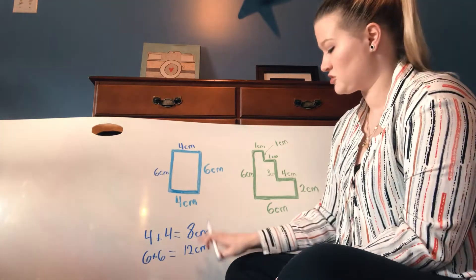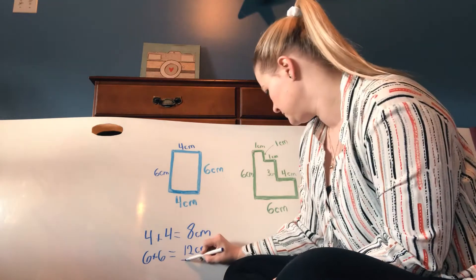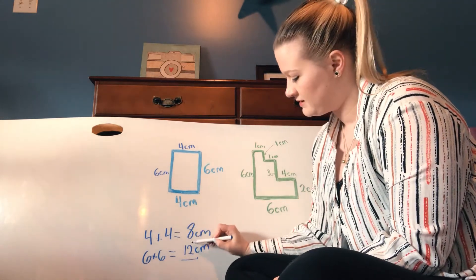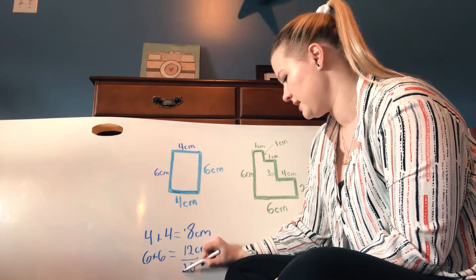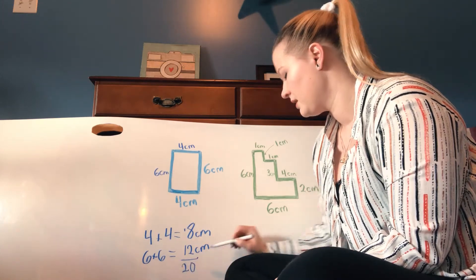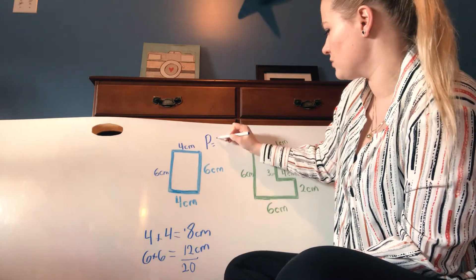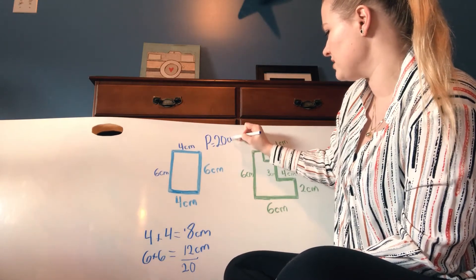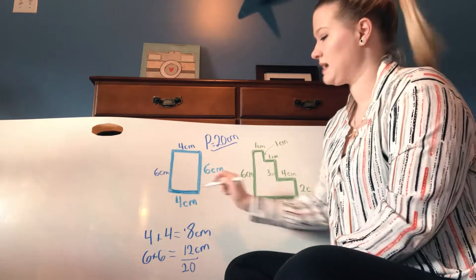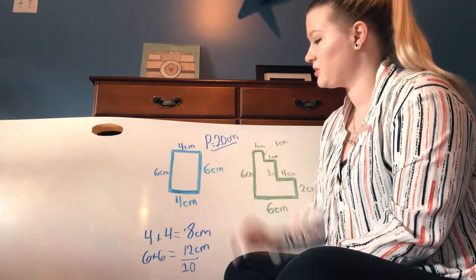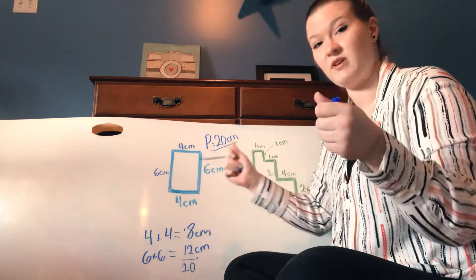Now we need to add those two measurements together: the 8 and the 12. So 8 plus 12 gives me 20. So when I look at this shape it means that the perimeter is equal to 20 centimeters — that's all four side lengths added together. If I was going to build a fence for this yard I would know that I would need 20 centimeters of fencing.